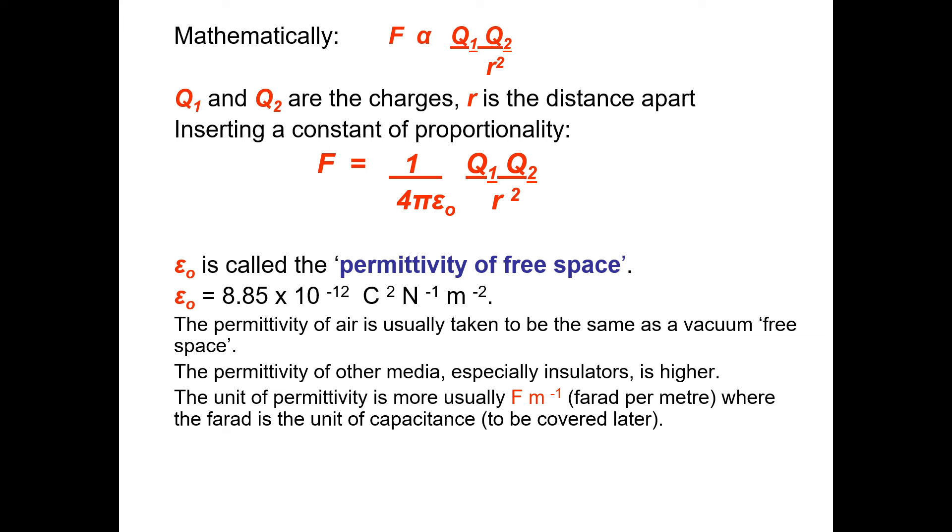Epsilon naught is called the permittivity of free space. The value of that is currently 8.85 times 10 to the minus 12. The permittivity of air is usually taken to be the same as vacuum, and other media would be higher. The unit is the farad per meter, but at this stage, students haven't come across the farad as a unit. That's worth glossing over. You can use the unit that's given there. More commonly farads per meter, but we'll come on to that later.